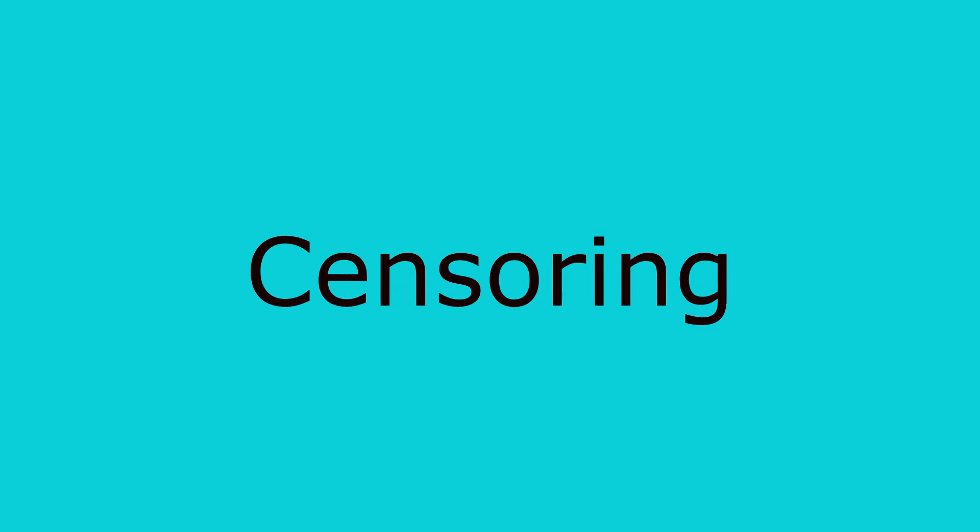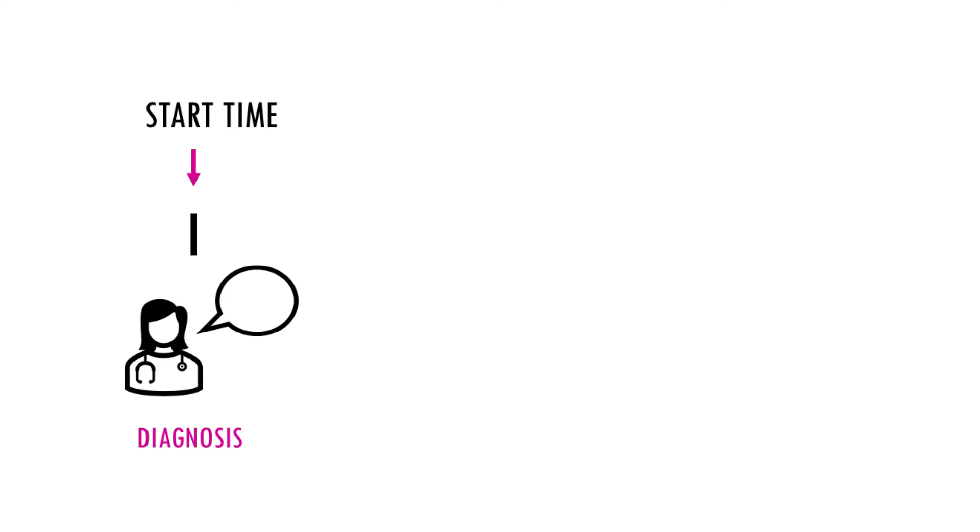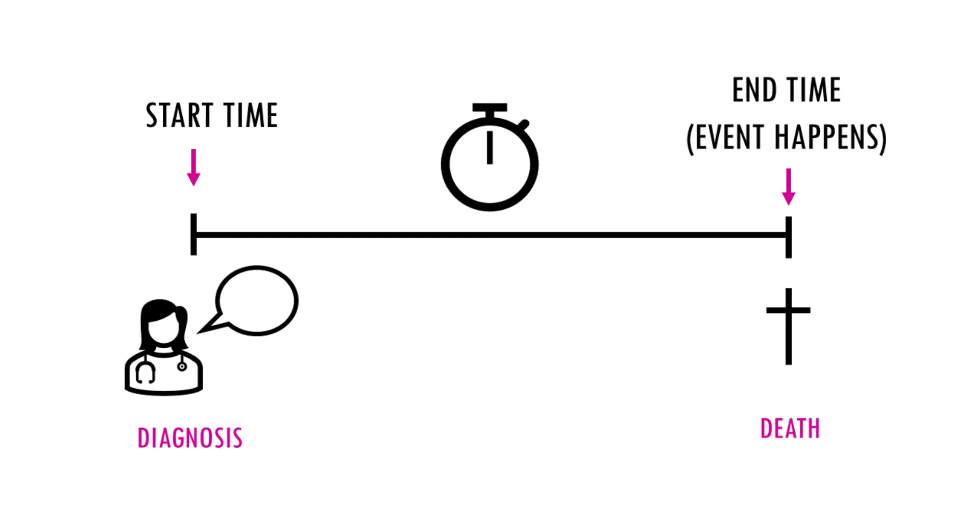So actually, I kind of simplified things before. We said survival analysis measures the time from a starting point and an ending point. But the ending point doesn't necessarily need to be when the event happens. It could also be when the patient or that observation is censored. So let's talk a bit more about censoring.